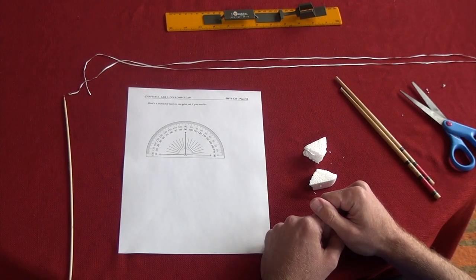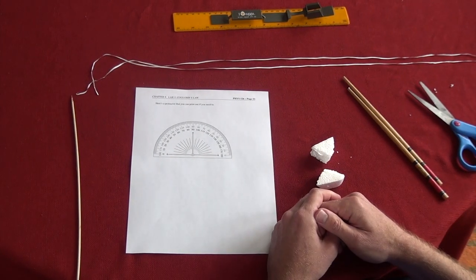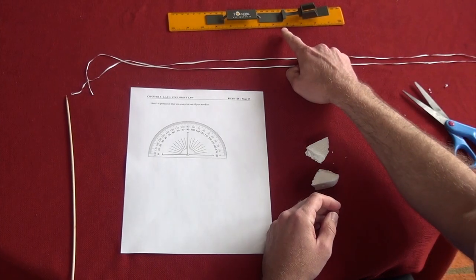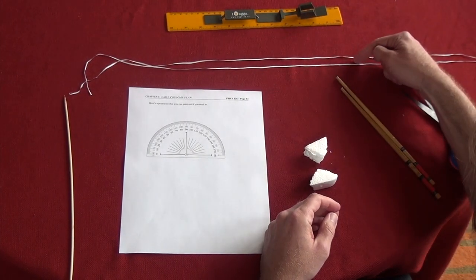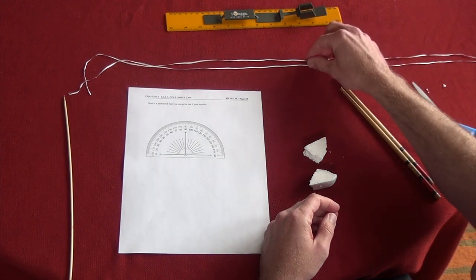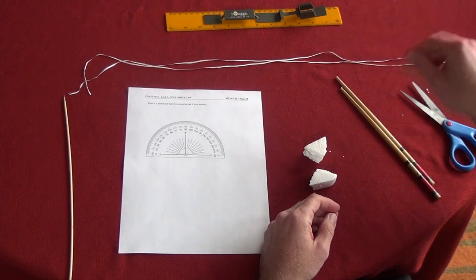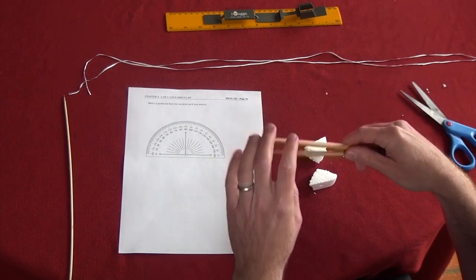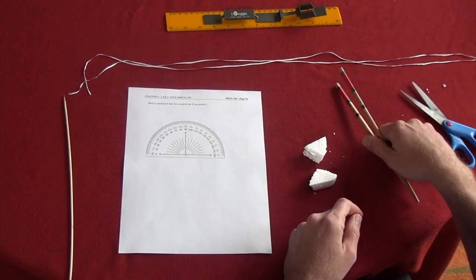This is the equipment we're going to need for the lab. It's a little bit of physics, arts, and crafts. We'll need a ruler for our measurements, a little bit of thread or dental floss to suspend our test charges, and a couple of long rods. I'm just using a pair of chopsticks here.